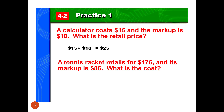A tennis racket retails for $175. It was marked up $85. So I take my $175, I subtract how much I marked it up by, $85. That means it cost me $90 to make it. I added in an additional $85 of a markup and I sold it for $175.